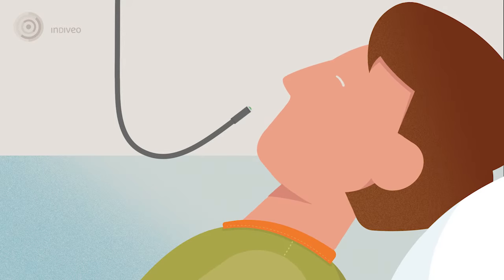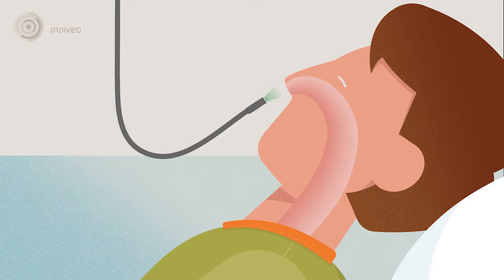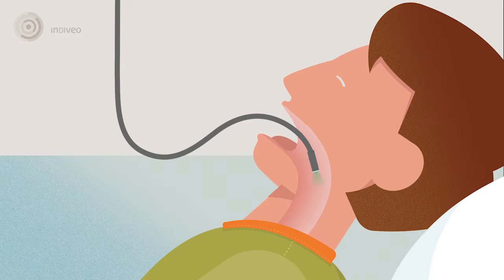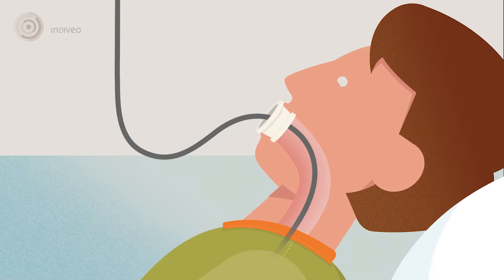The physician will carefully insert a camera-equipped tube into your airways via your nose or mouth. This is called a bronchoscope. The physician places a mouth guard in case the bronchoscope is inserted via the mouth.